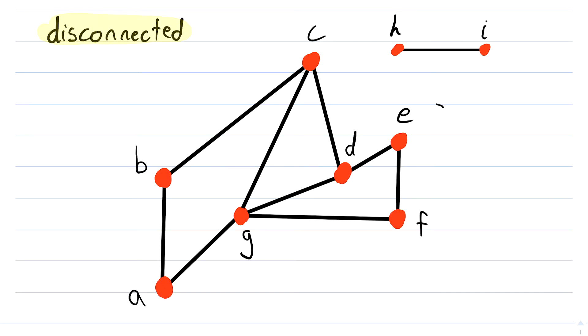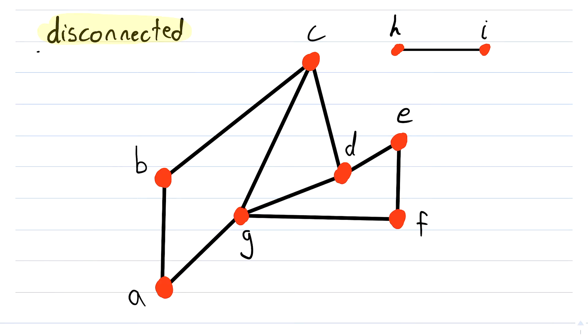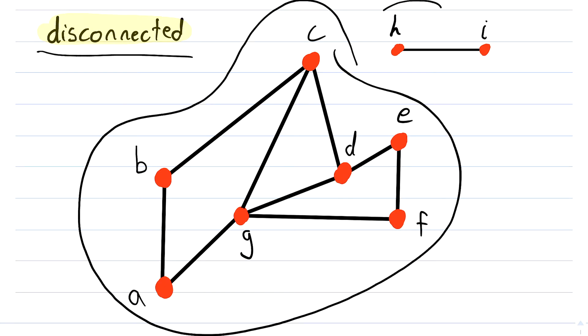You can see now that if we start in any of these vertices in this graph, we're not going to be able to traverse edges to get to h or i. And if we start at h or i, we're not going to be able to traverse edges to get to any of these vertices. So indeed, this graph is not connected. It is a disconnected graph, and it's made up of connected components.